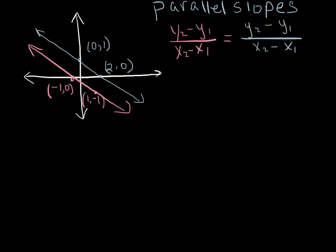We could either look at the graph and we can see that the rise over the run is going to be the same for that pink line and this blue line. The rise and the run are going to be the same.